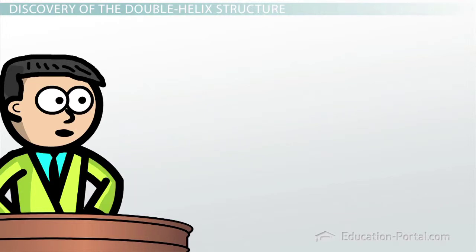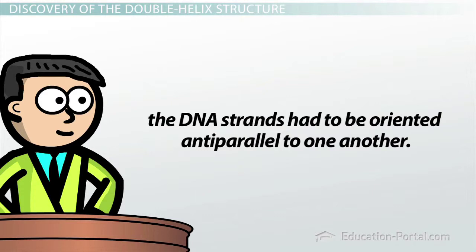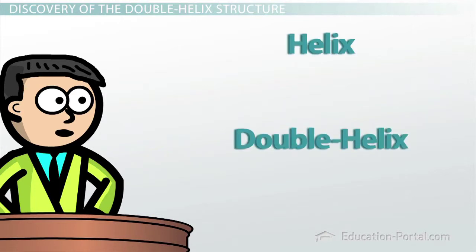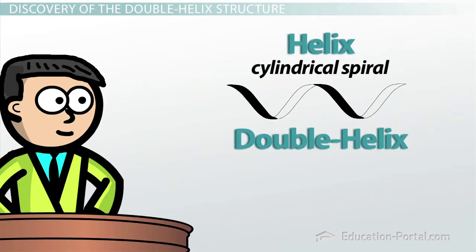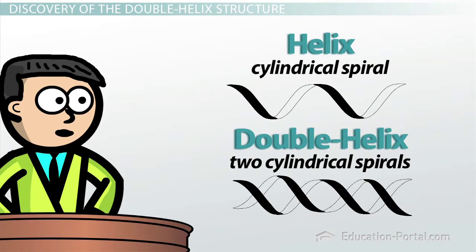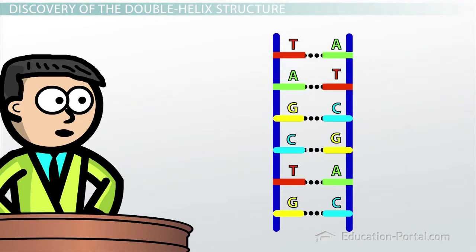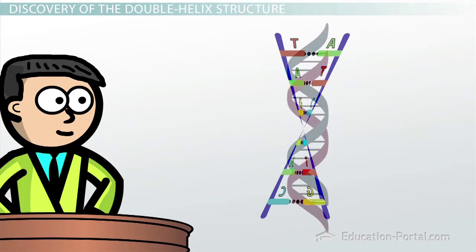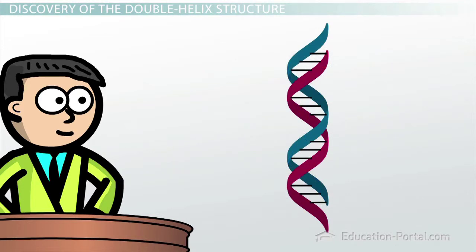In order to reconcile the X-ray data and Watson's model of the ratio between bases, Crick realized that the DNA strands had to be oriented anti-parallel to one another. This led the two of them to postulate the famous double helix structure of DNA. A helix is a cylindrical spiral; a double helix is basically just two cylindrical spirals. Picture DNA as a ladder with backbones made of phosphate groups and sugars, and rungs of nitrogenous bases held together by hydrogen bonds. Then twist the ladder around an imaginary central axis. The structure of the molecule looks a little like a spiral staircase.